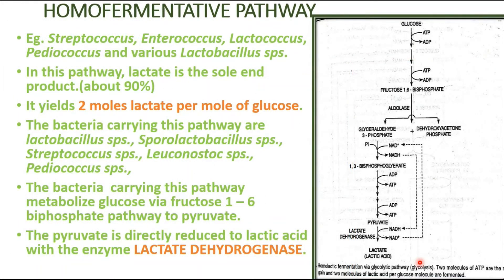The homo-fermentative pathway, or homo-lactic fermentation, mainly proceeds through the glycolytic pathway or glycolysis by bacteria such as Streptococcus, Enterococcus, Lactococcus, Pediococcus, and various Lactobacillus species. In the homo-fermentative pathway, the sole end product is lactate — meaning the majority of the product obtained is lactate.